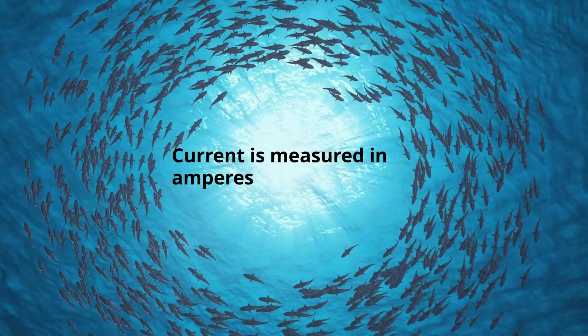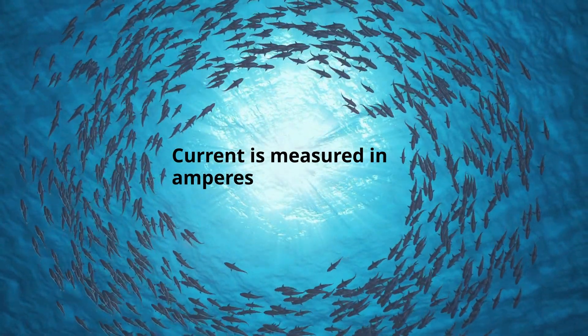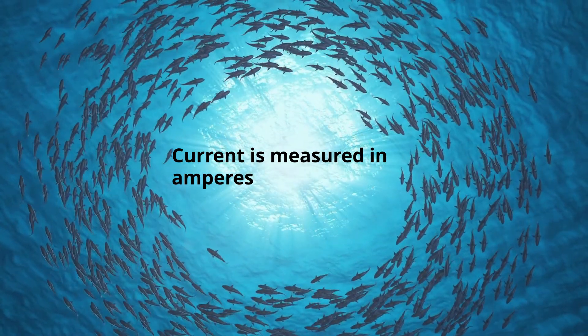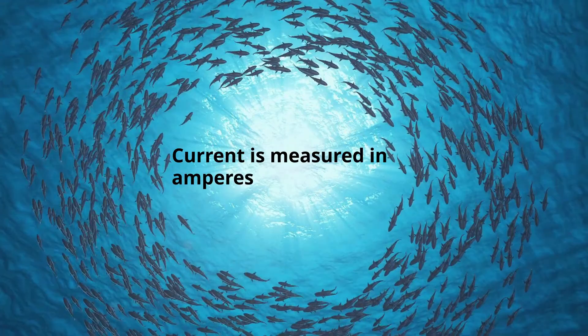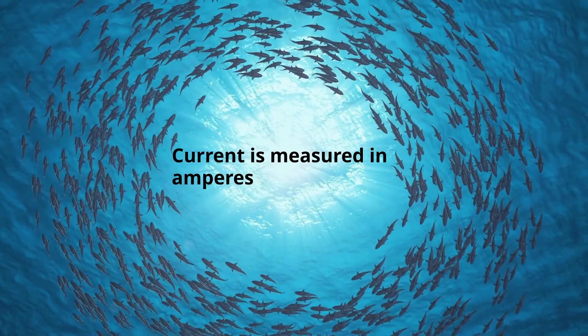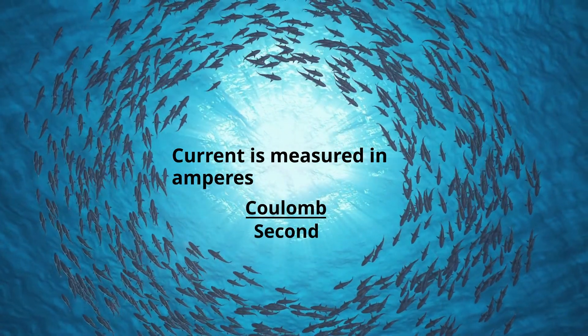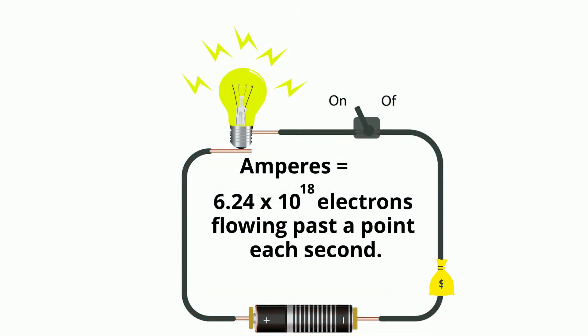Current is all about movement. It is measured in amperes and is a measure of one coulomb of charge passing a point in a circuit every second. It is written as coulomb per second. In other words, an amp is 6.24 times 10 to the 18 electrons flowing past a point each second.